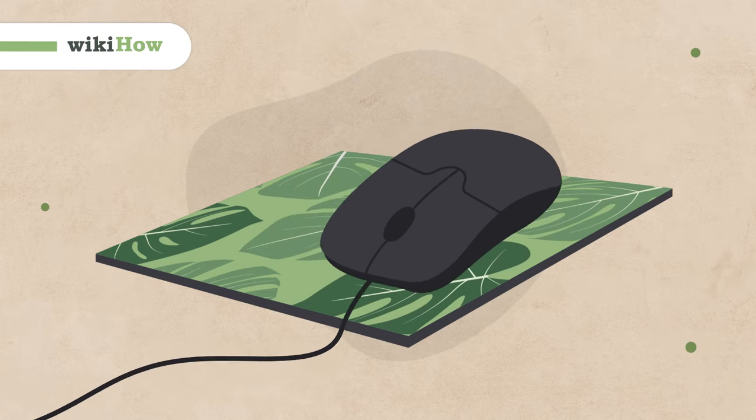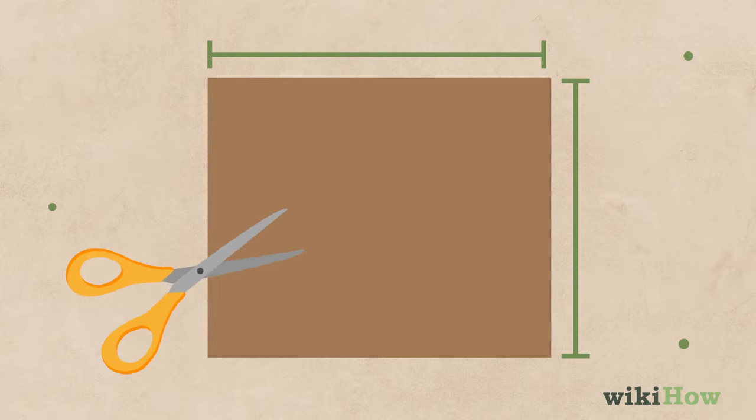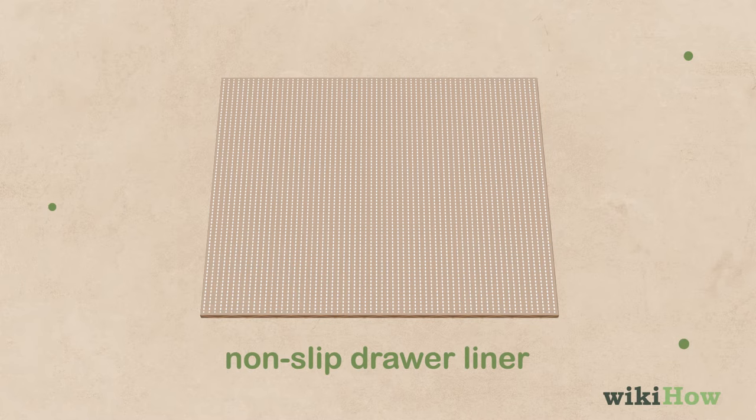To make your own mousepad, cut out a piece of cardboard in the size and shape you want your mousepad to be. Attach a piece of non-slip drawer liner to the back of the cardboard to keep it from sliding around on your desk.